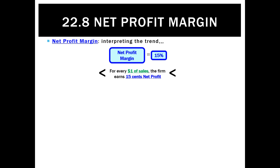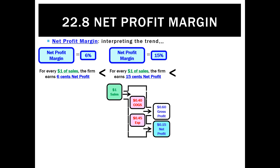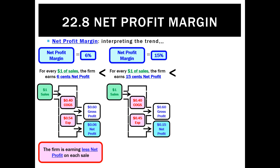Looking at interpreting the trend: if it went from 15% down to 6%, that's a bad trend. That means for every dollar of sales, assuming gross profit stayed the same, other expenses went up to 54 cents in every sales dollar, leaving only 6 cents at the end of the period. That's a bad trend because we're having lower profitability — we're earning less net profit on each sale.